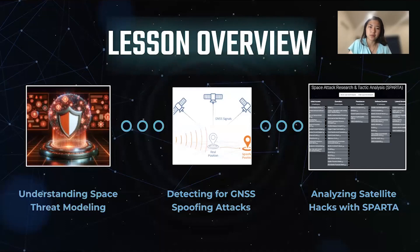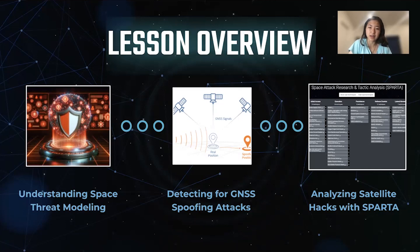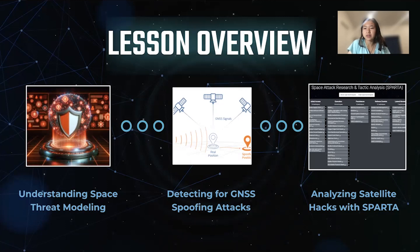A brief lesson overview. Firstly, we're going to be understanding threat modeling within a space-based environment. Then we're going to be doing one lab to detect for GNSS spoofing attacks. If you recall, in the first lesson of this module, we went over how you can simulate a GNSS spoofing attack. Now we're going to flip to the other side of the coin and cover how we're going to be detecting for them. And then lastly, we're going to be analyzing satellite attacks with a threat modeling framework called SPARTA.